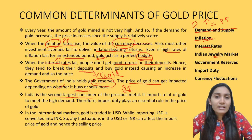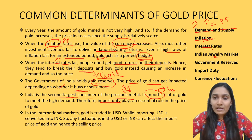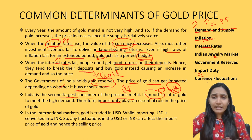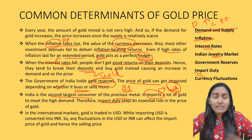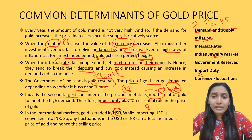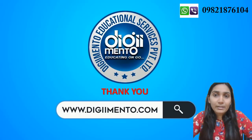India is the second largest consumer of precious metals and imports a lot of gold to meet high demand. Therefore, import duty plays a very important role. Since India is dependent on imports, if the import duty is increased by countries that export gold to India, prices can increase further. Another factor is currency fluctuation — in the international market, gold is traded in US dollars, so when the value of the US dollar increases, the price of gold in Indian rupees also increases.